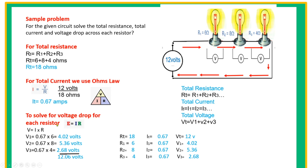To solve the voltage drop for each resistor, we use Ohm's Law: E equals I times R. For V1, we multiply 0.67 amps by 6 ohms to get 4.0 volts. For V2, 0.67 times 8 ohms gives 5.36 volts, and so on. When we sum all the voltage drops, we get approximately 12 volts, consistent with the formula Vt equals V1 plus V2 plus V3.